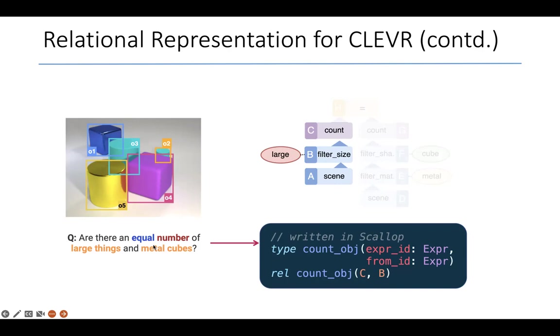Which is what this question is trying to ask in its first part. In order to tell whether there's an equal number of large things and metal cubes, I first need to count the number of large things. And that is what this entire expression is doing, and this is how it's written in Scallop.